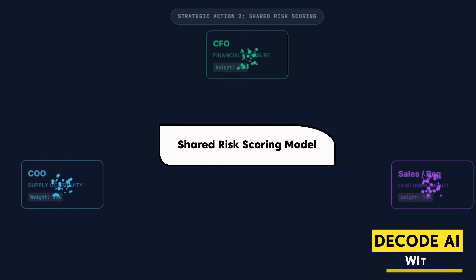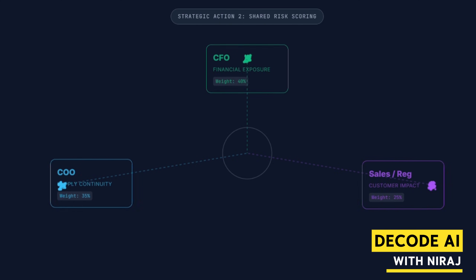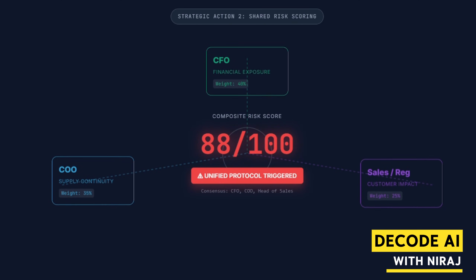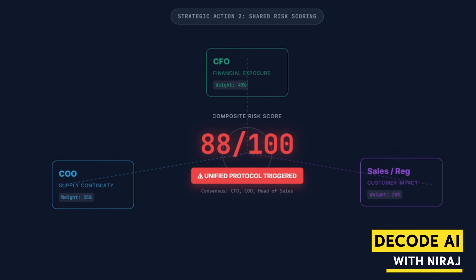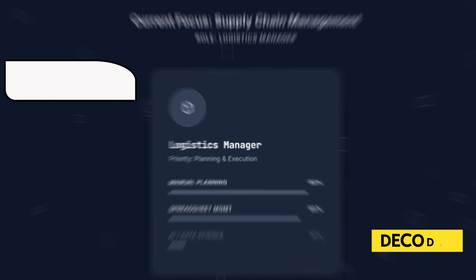Strategic Action Two: Define a Shared Risk Scoring Model. The C-suite must align on risk. Work with your peers — the CFO, COO, and Head of Sales — to formally define and integrate a shared, weighted risk score for every critical component. This score must quantify the financial exposure, customer impact, and regulatory penalty associated with a disruption. This shared metric makes Gen AI's recommendations immediately quantifiable and actionable across departments.